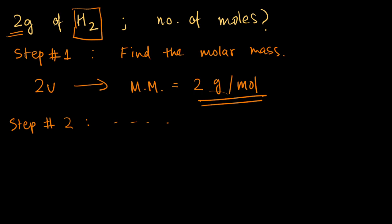So the number of moles equals the mass, which is 2 grams, all over our molar mass, 2 grams per mole. Now if you solve this, you'll find that the units get cancelled.